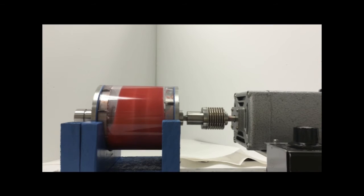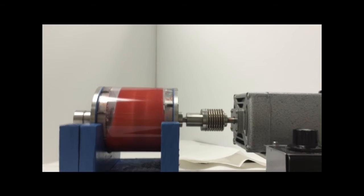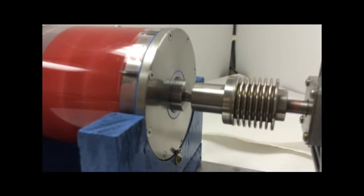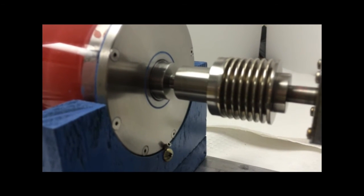With the shaft rotating at 1200 RPM, the lubricant is being slung throughout the housing. Note that there is no leakage from the seals.